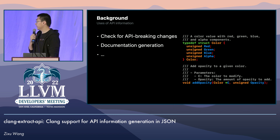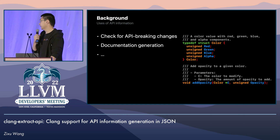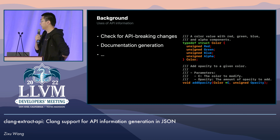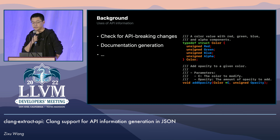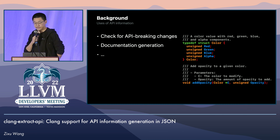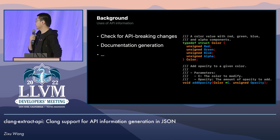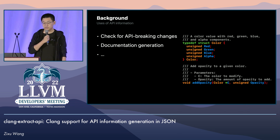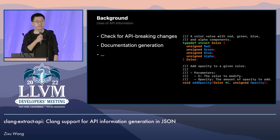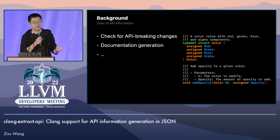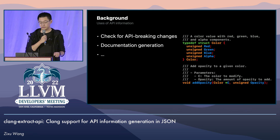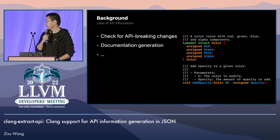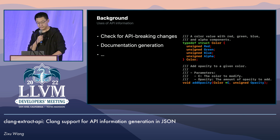For example, I could use the information to check if I have accidentally made an API breaking change in an update. I could also use this information to generate and publish documentation for my library. So our goal is to enable developing such downstream tools that utilize this API information without having to write a parser again, or even to understand the Clang AST in the tools themselves.